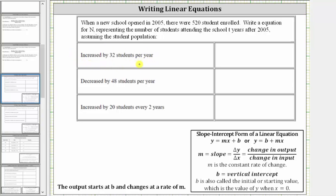Because we have a constant rate of change, we will have a linear equation. We'll write the equations in slope-intercept form, and we'll use the form y equals b plus mx, where b is the vertical intercept — but it's also the initial or starting value, or the value of y when x is zero — and m is the slope, but it's also the constant rate of change.